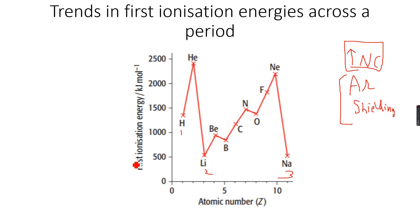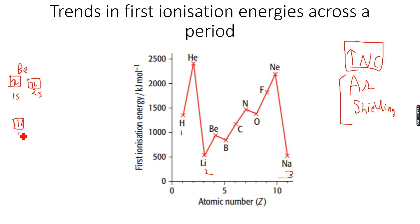We will need the help of orbitals to understand this concept. Beryllium has 4 electrons in total: 1s filled with 2, then 2s filled with 2. Boron has 5 electrons: 1s filled with 2, then 2s filled with 2, and we are left with 1 which goes into a 2p orbital. So boron has 1 electron in the 2p orbital.